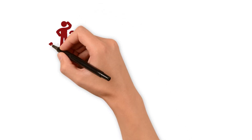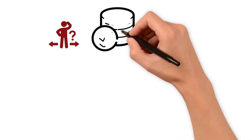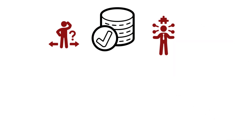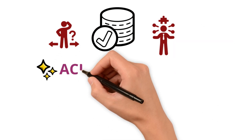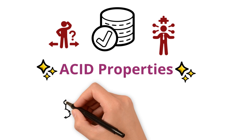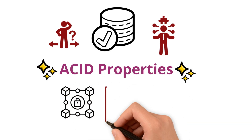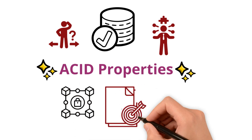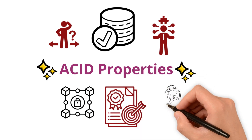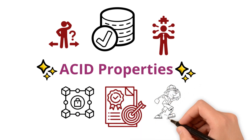Ever wondered how databases ensure data integrity, especially during complex transactions? ACID properties are the foundation for data trust in your database system, ensuring your data is accurate and reliable. Let's explore what they are and how they work.